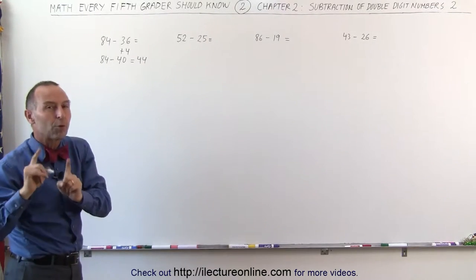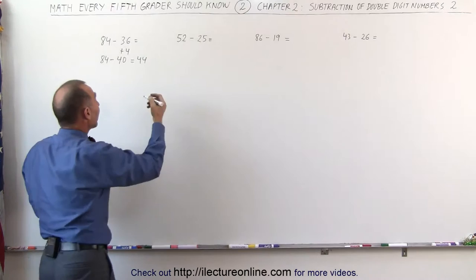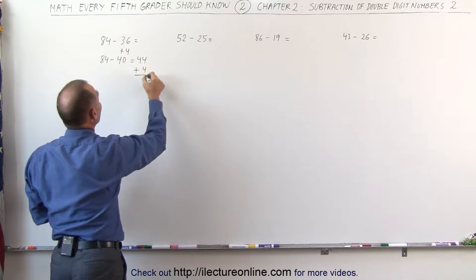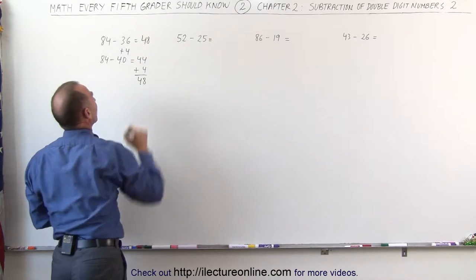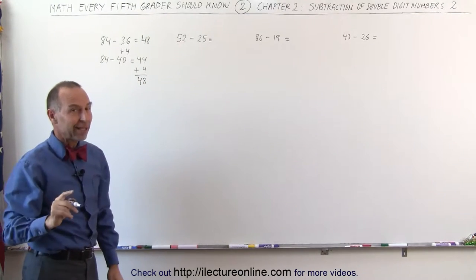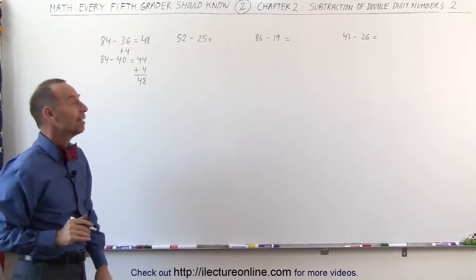But remember, I subtracted 4 more than I should, so I have to add that again to the final answer. 4 plus that gives me 48, and that's the answer to the subtraction. Did you like that? I hope you did. Let's try it again.